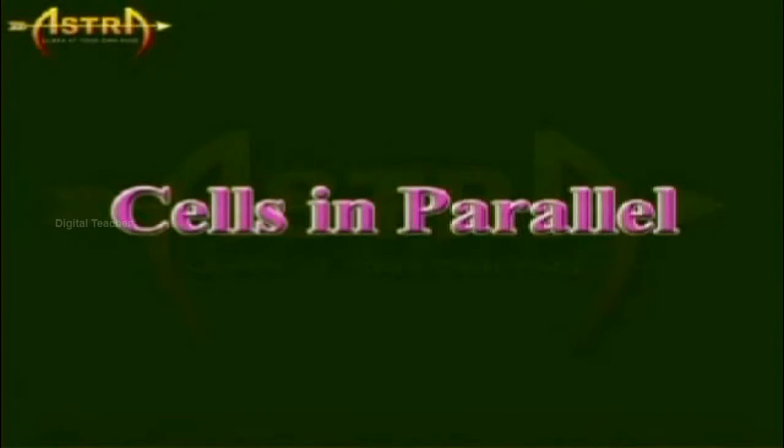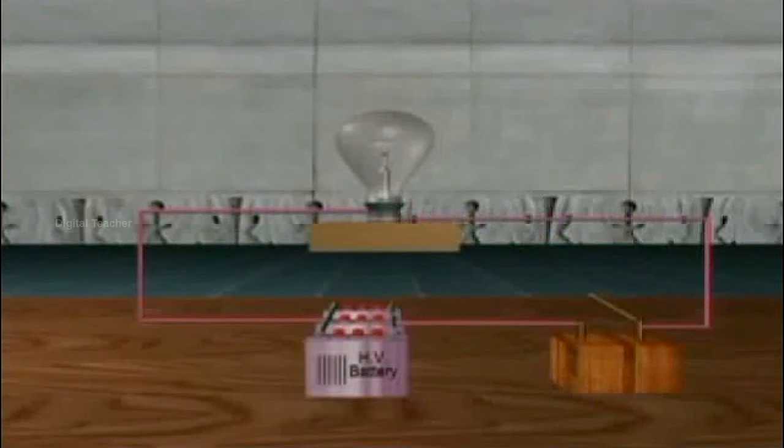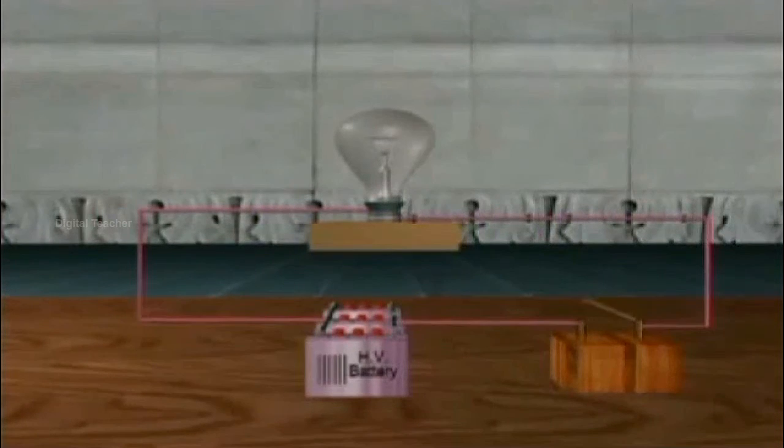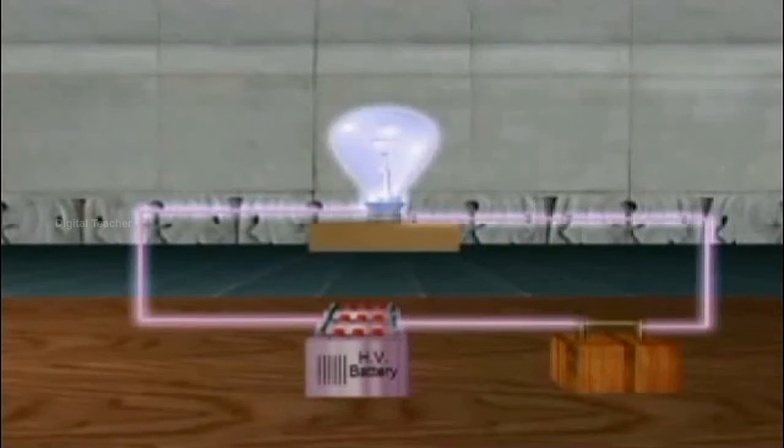Cells in parallel. In place of a single cell, if two or more identical cells are connected in a particular way called parallel connection, the bulb glows with the same brightness. However, the time for which the single bulb glows increases.